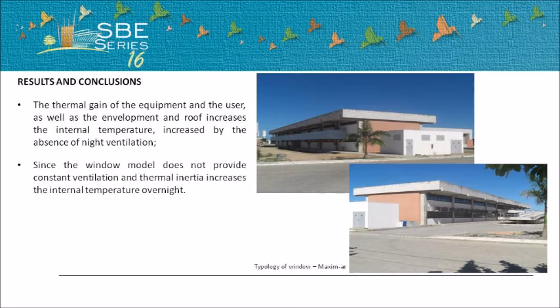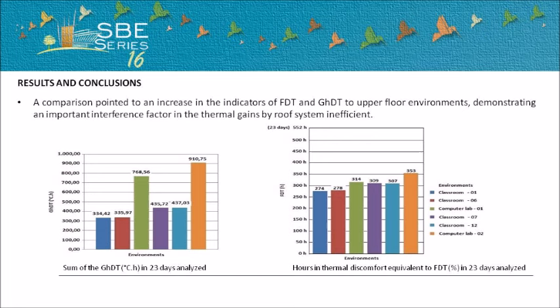The thermal gain from equipment and users, as well as the envelope and roof, increase the internal temperature, further increased by the absence of ventilation, where the window model does not provide constant ventilation and thermal inertia increases the internal temperature during overnight ventilation.